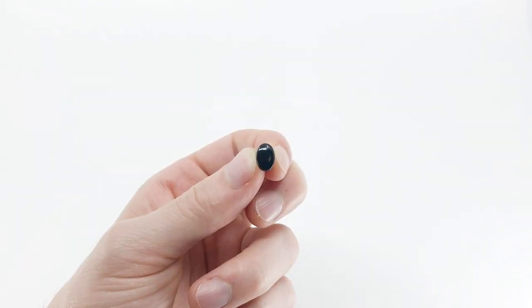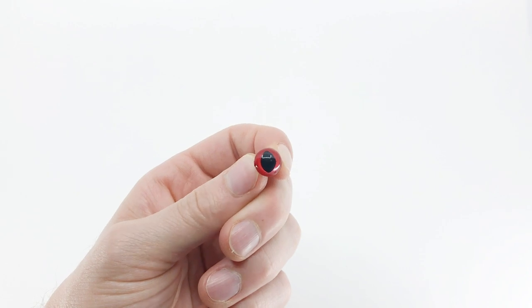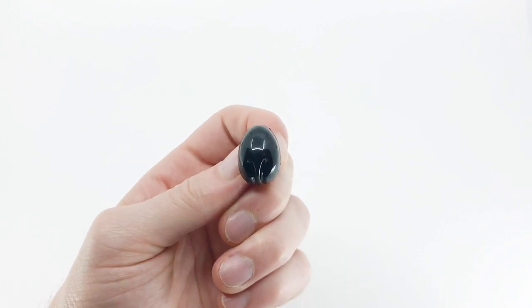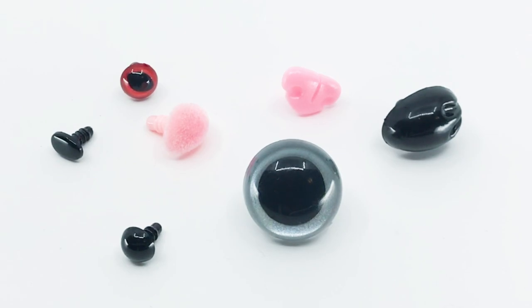They come in all shapes and sizes. You can get round ones, oval ones, felt ones, some that look like cat eyes, some that look like little noses, some that look like koala noses. There are an insane combination of types.